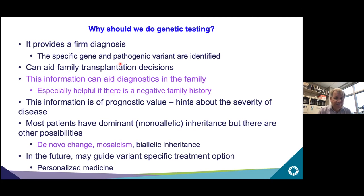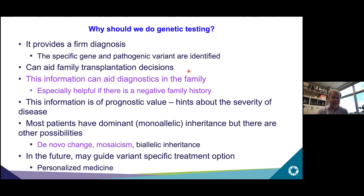Genetic testing provides information that can aid diagnostics in the family, especially when there's a negative family history, and it can help with transplant decisions — for instance, confirming that a potential living-related donor definitely doesn't have ADPKD. A negative family history is not that uncommon, and I'll show you the consequences of de novo changes and mosaicism.